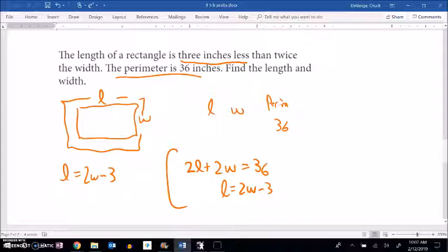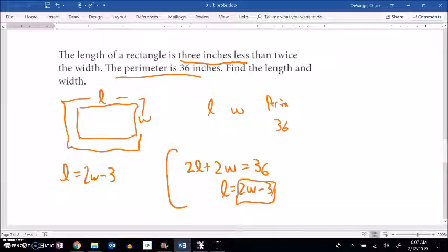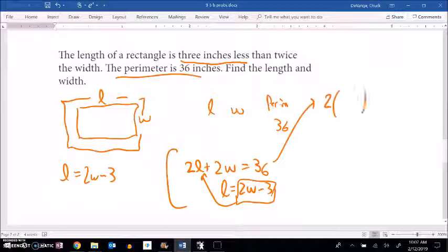Find the length and width. So I have this system. Now you can solve it any way you want. You could subtract that 2W from both sides and do elimination. I think I'm going to do substitution just because it's already in this nice form, L equals that. So I'm going to plug that in for L over here. So I have two times the length. The length happens to be two times the width minus three plus two times the width equals 36.